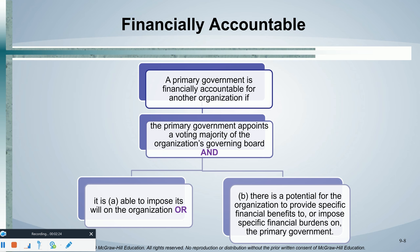Let's take a look at this decision tree. A primary government is financially accountable for another organization — meaning that component unit will be reported within the same CAFR. A primary government is financially accountable if the primary government appoints a voting majority of the organization's governing board. For example, if the other organization has a governing board of five people and the primary government appoints at least three of them, that is a voting majority, and we've met that criteria.